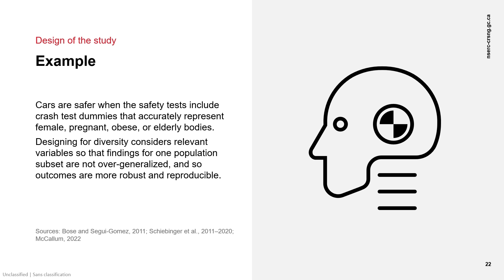Designing for diversity considers relevant variables to ensure that findings for one population subset are not overgeneralized, and so outcomes are more robust and reproducible.